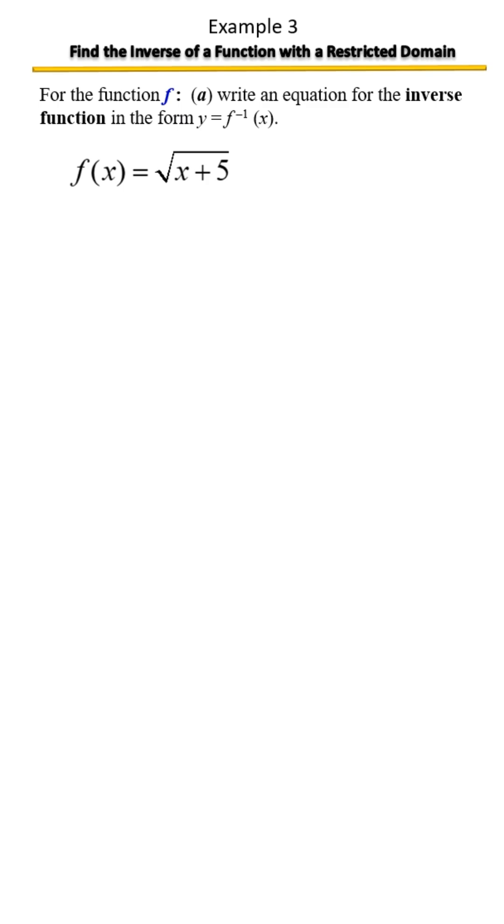We'll start by finding the inverse of the given function. There are three steps to doing this. Step 1: swap or interchange x and y. Step 2: solve for y. And step 3: replace y with inverse notation form.